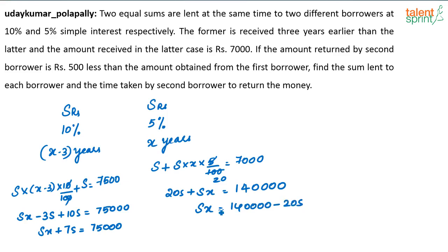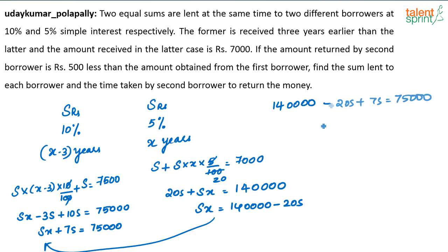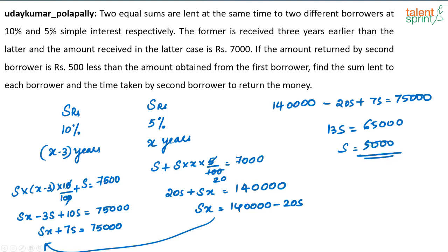Put that into the second equation. Substituting SX equals 140000 minus 20S into SX plus 7S equals 75000, you get 140000 minus 20S plus 7S equals 75000, which gives 13S equals 65000, so S equals 5000.